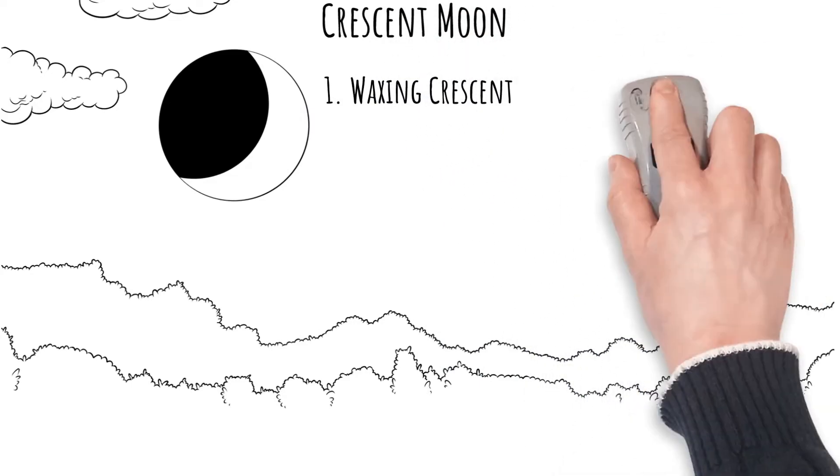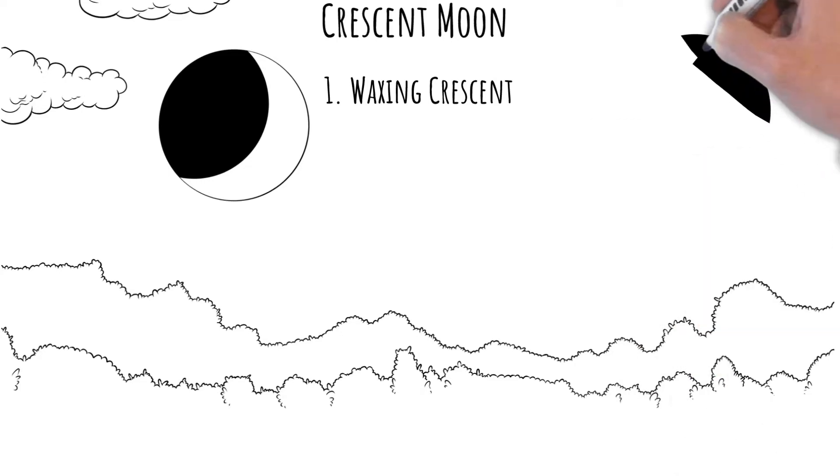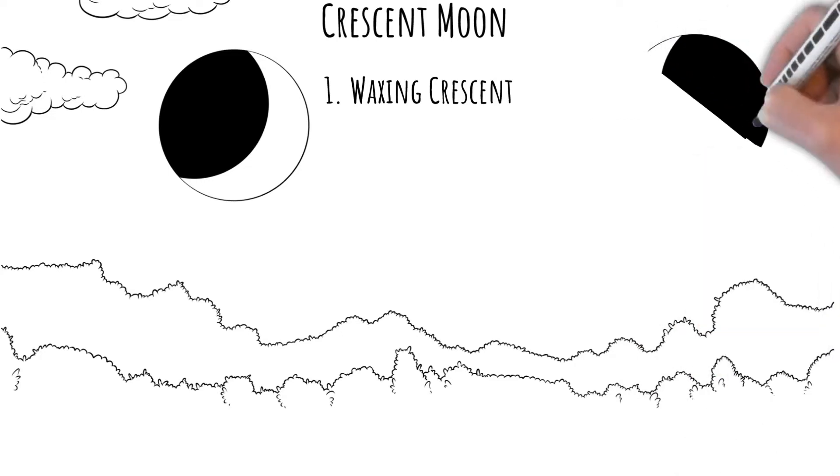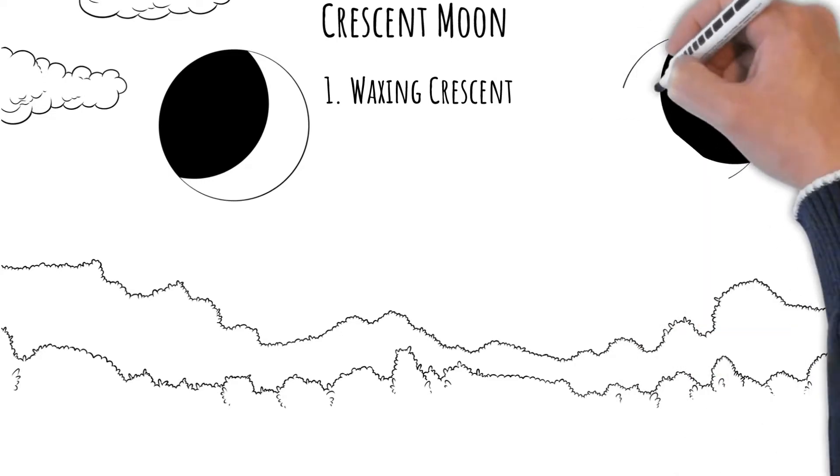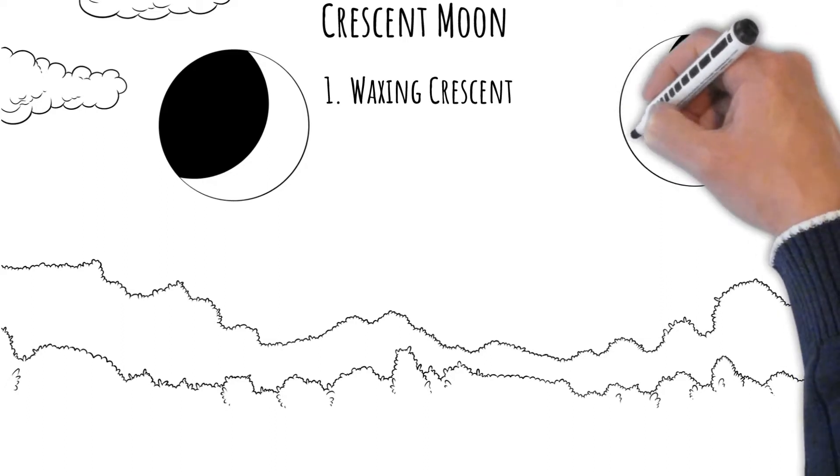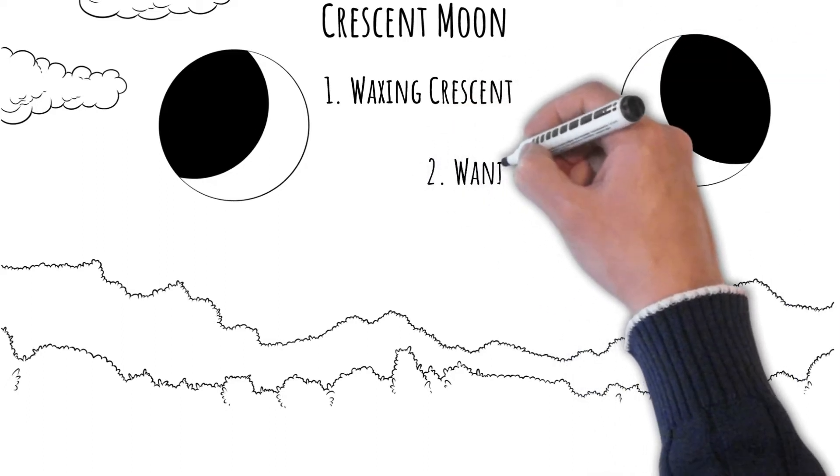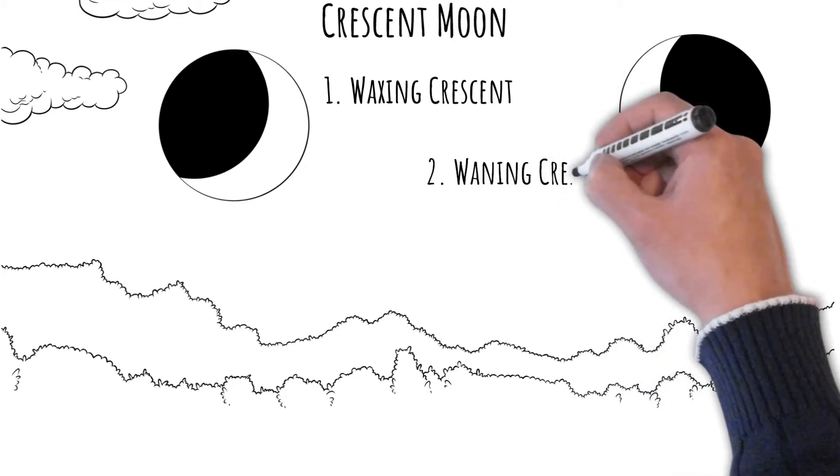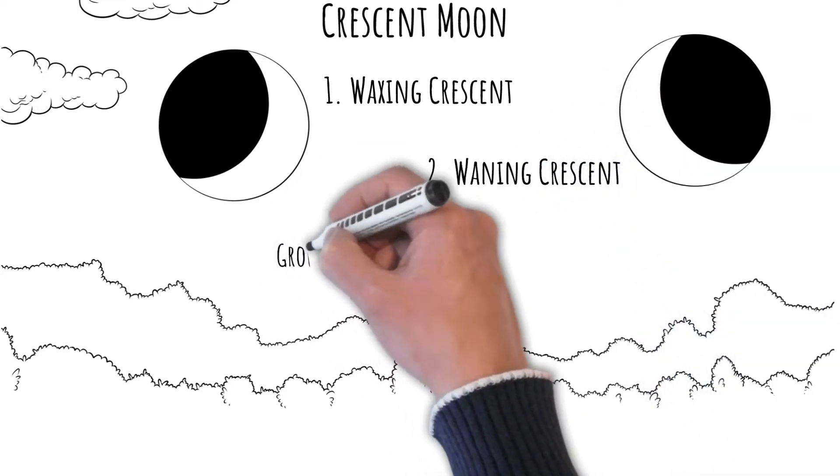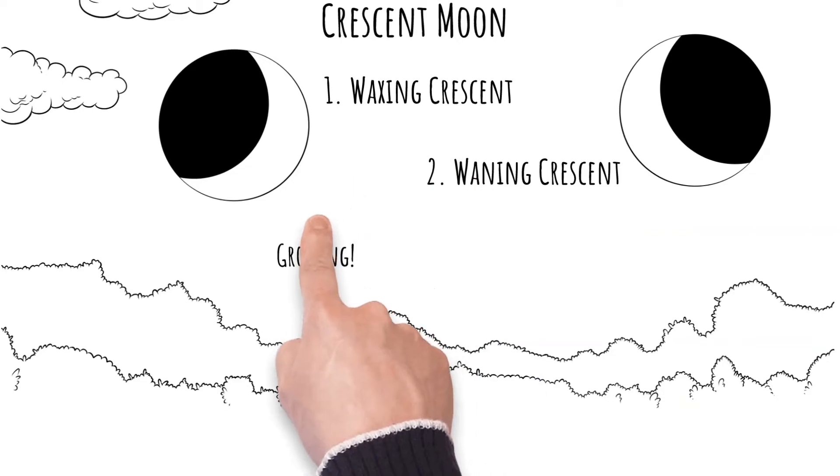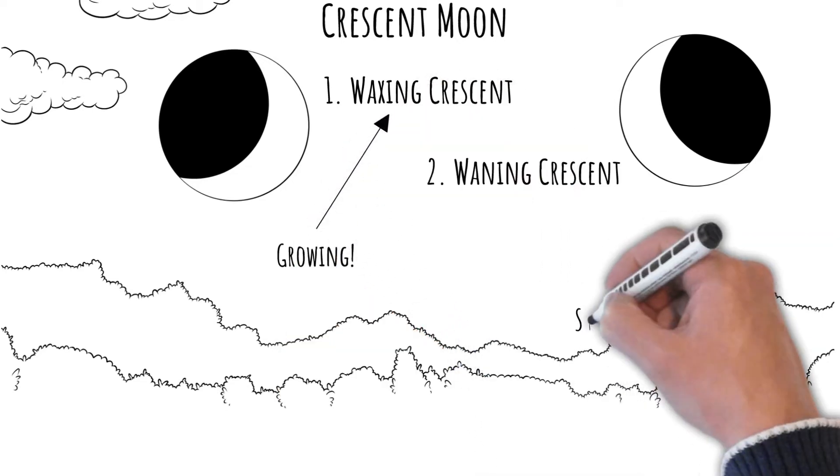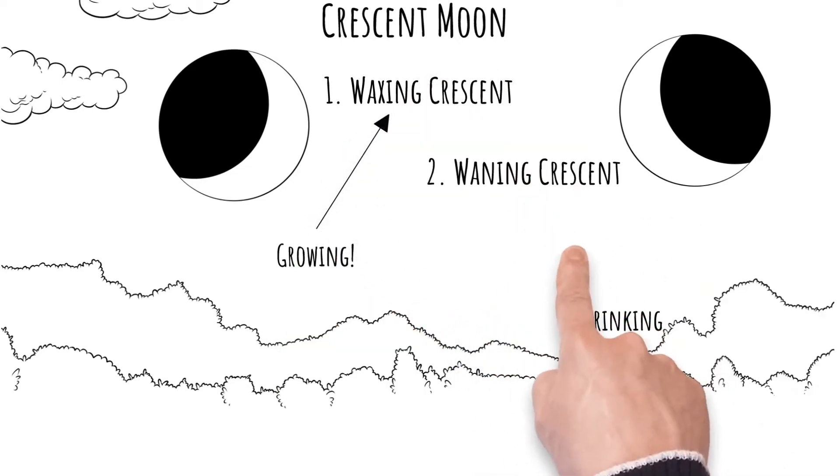The waxing crescent is when the illuminated or day side of the moon is slowly growing larger, which means it's turning towards us daily. The waning crescent moon is when the illuminated side is growing smaller daily and turning away from us with every passing day.